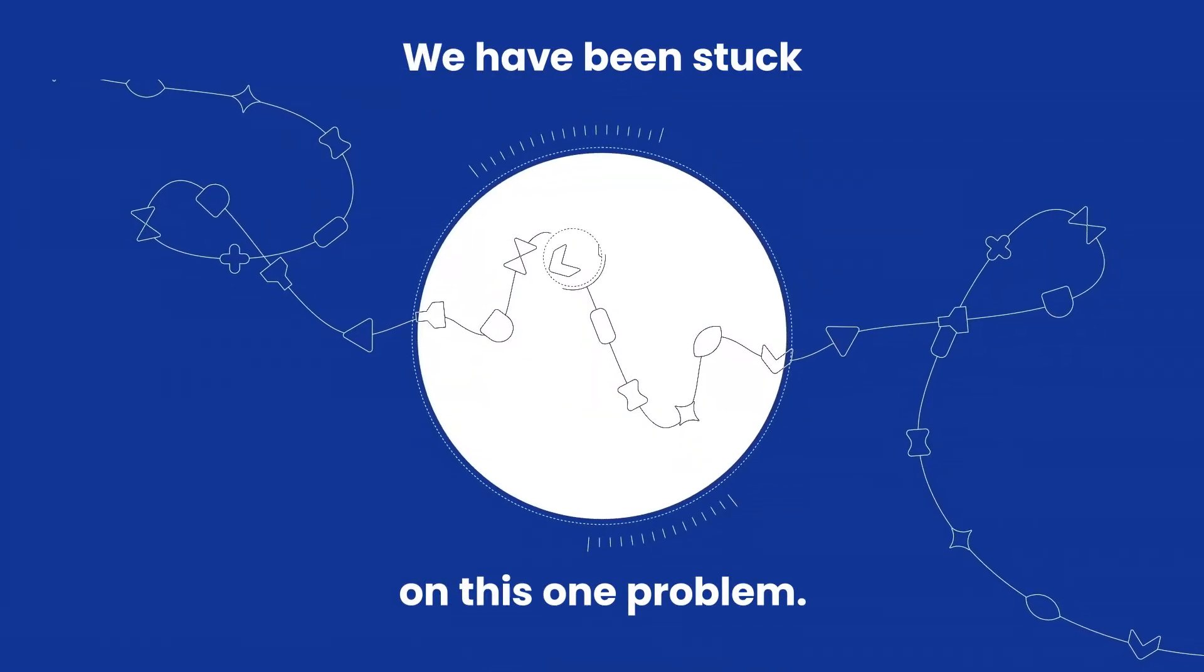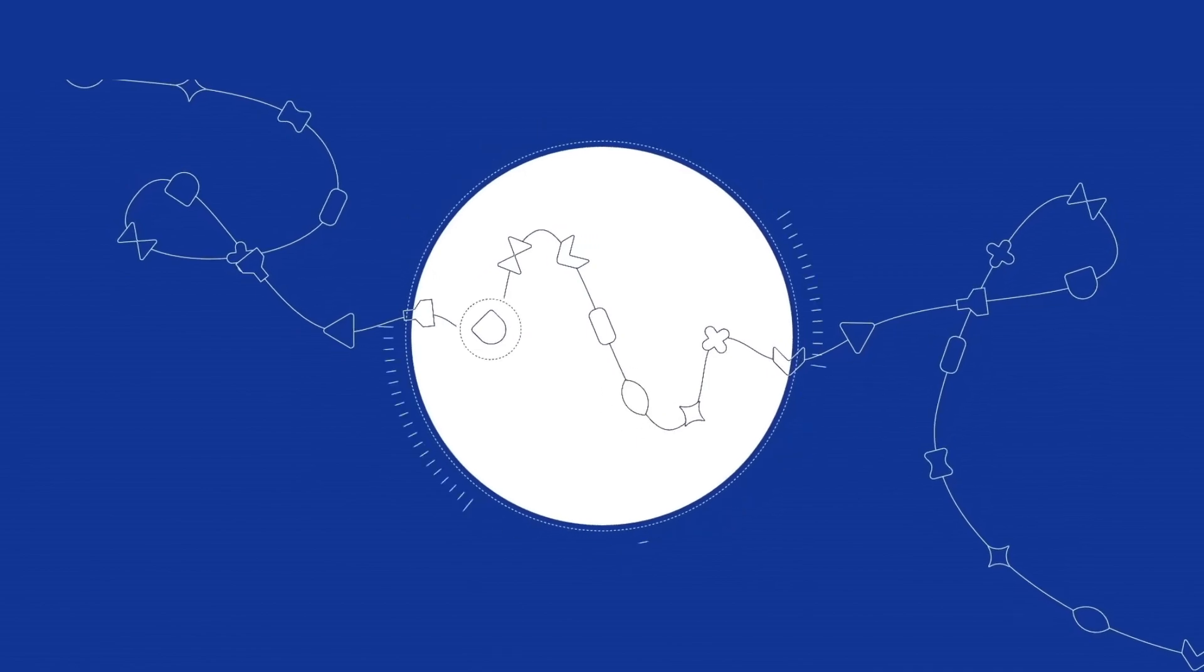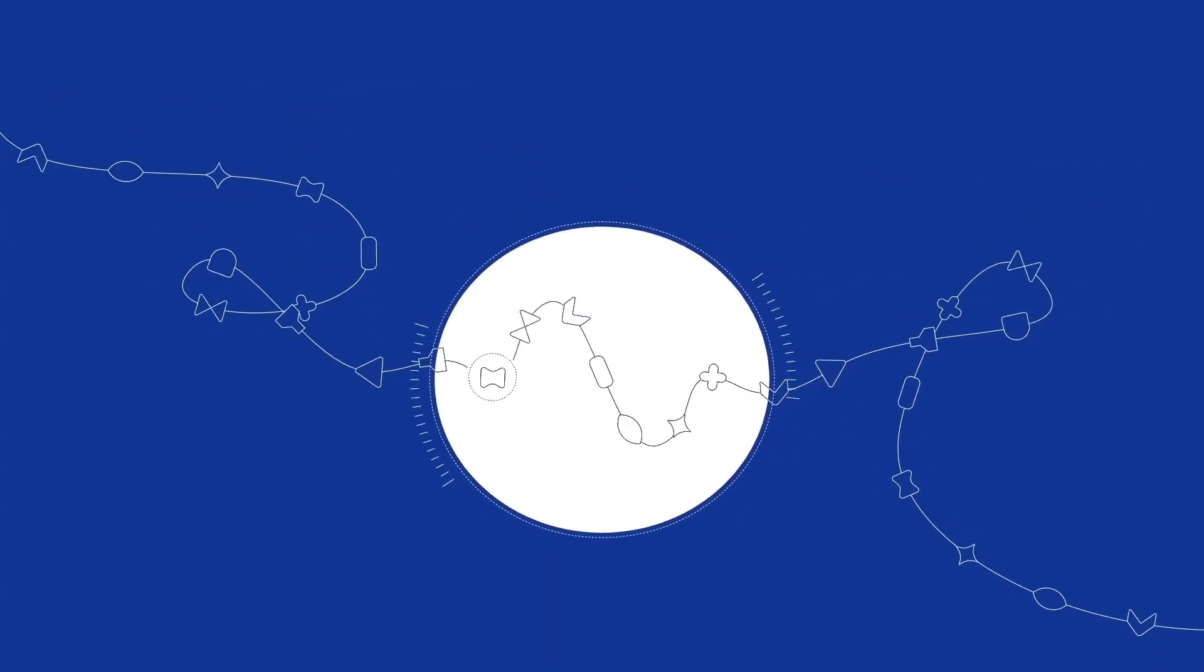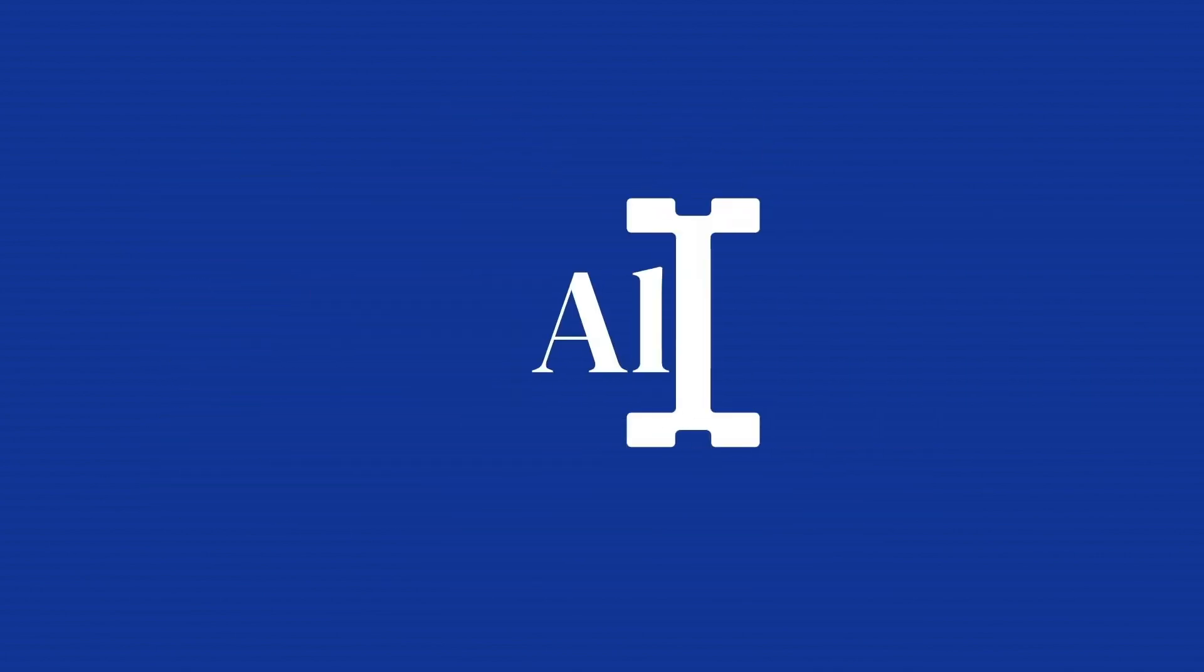We have been stuck on this one problem. How do proteins fold up? If we can reliably predict protein structures using AI, that could change the way we understand the natural world. The DeepMind machine learning program called AlphaFold. Meet AlphaFold, an AI project created by DeepMind. It's an artificial intelligence company working under Google.